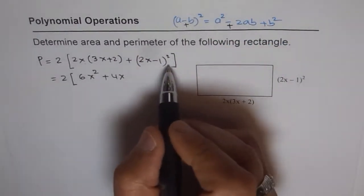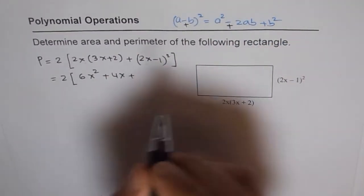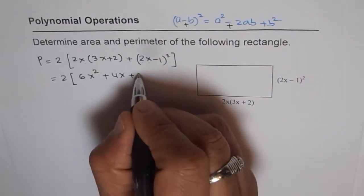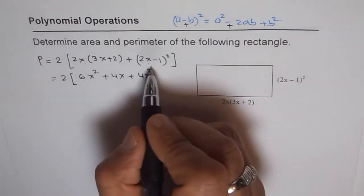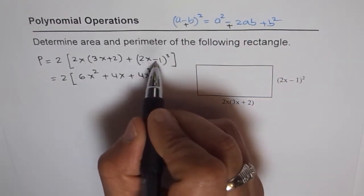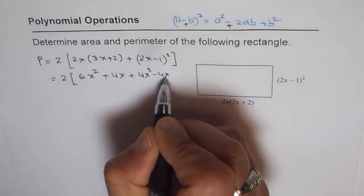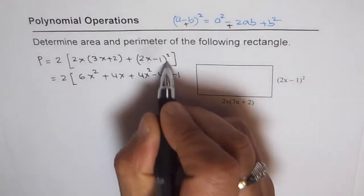Or you can expand and get the answer. Anyway, we will apply the formula here. So a squared is square of 2x which is 4x squared, minus 2ab minus 2 times 2x times 1 which is 4x, minus 1, 1 squared.